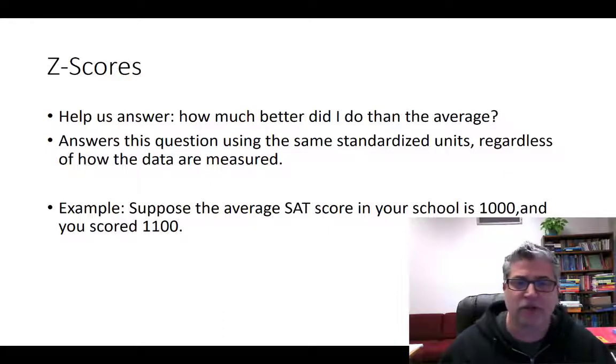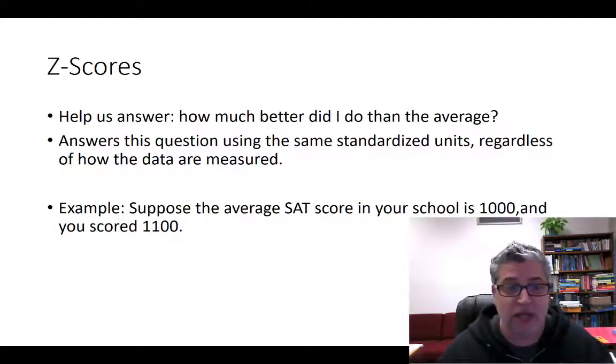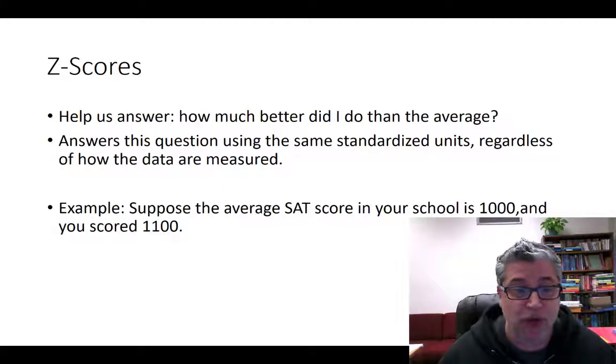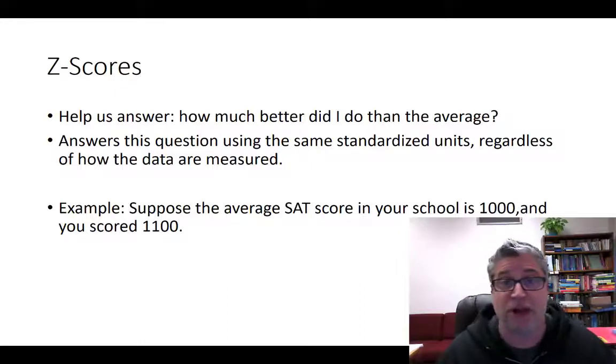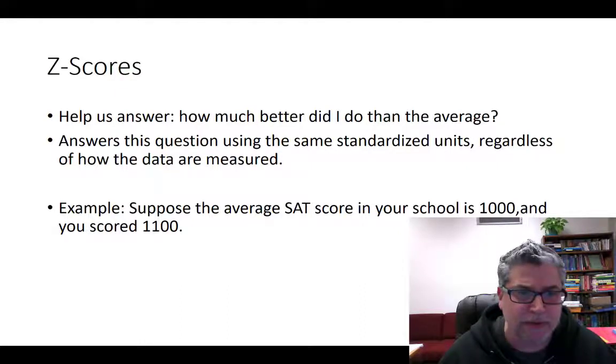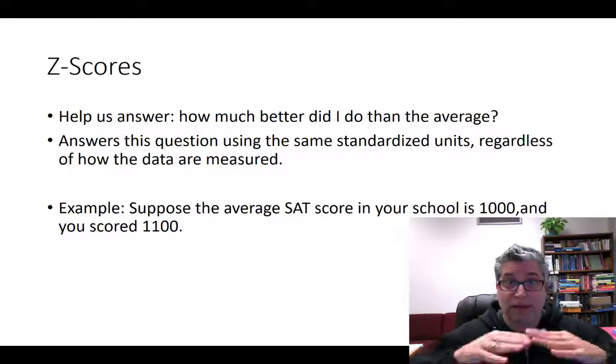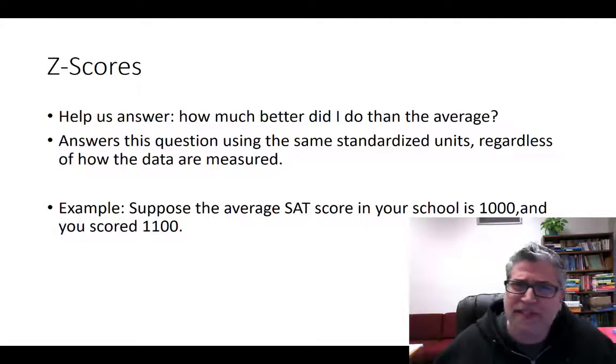But let's say that you're told that the average score in your school was 1000 and you scored 1100. How much better than average did you do? Now, if that's all that you know, all you can say is you did 100 points better than average. So, you know you did better than, you know, 50% of the population, presuming, you know, like this symmetric bell-shaped curve. But that's it. We need more data.